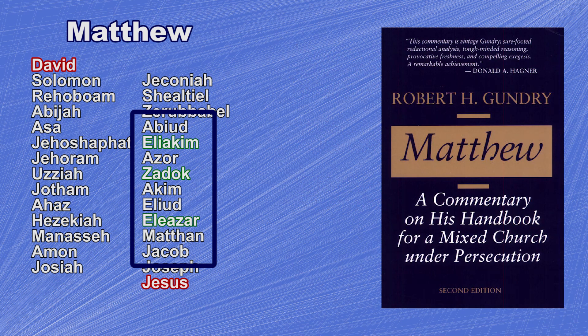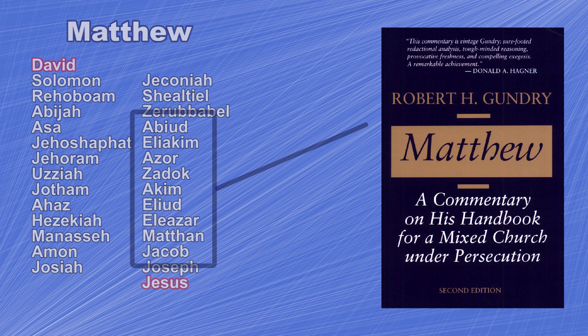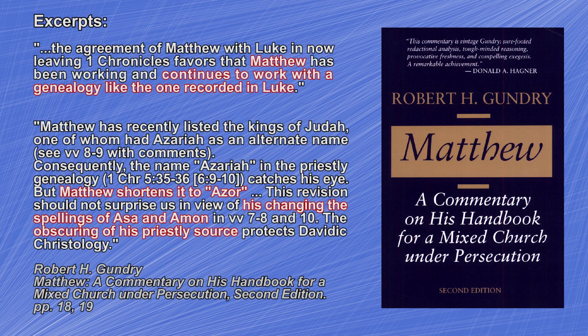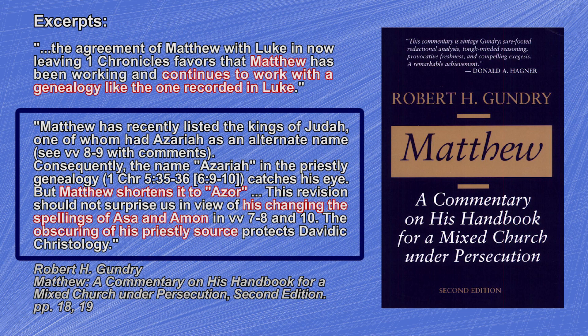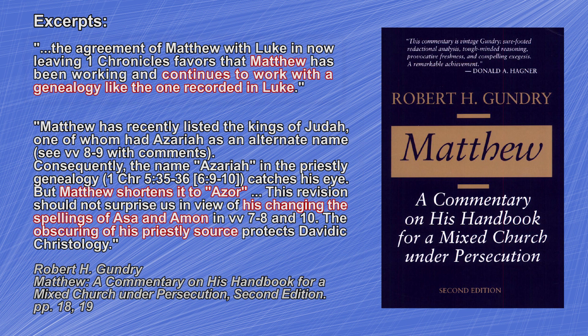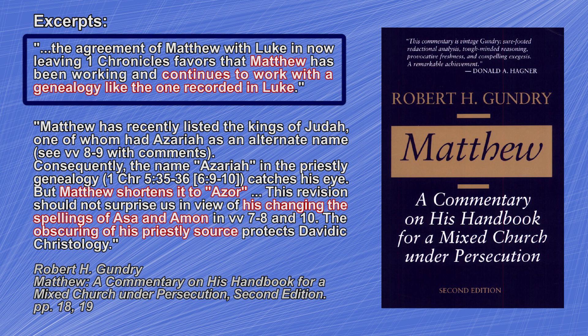Christian scholar Robert Gundry essentially finds many of these names to be a fabrication. His controversial commentary on Matthew suggests that Matthew was picking and choosing names from the Old Testament, often altering the spelling of names in the process, perhaps to avoid detection. He theorizes that Matthew had a copy of the same genealogy that Luke uses, or at least a similar copy, and that Matthew used this as a basis for his own list of names.